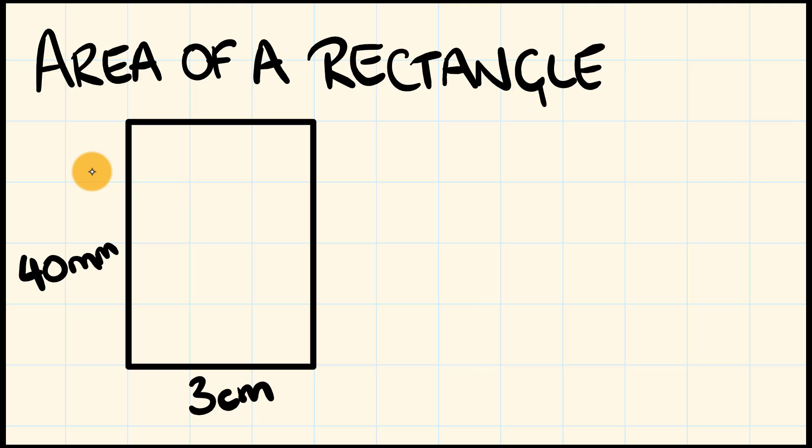So we have a rectangle here which is 3 centimetres wide and 40 millimetres long. Now as you might notice, the units here differ from each other. For the 40, we have millimetres and we have 3 which is in centimetres. So before we work out this rectangle's area, we need to make both of these measurements into the same units.